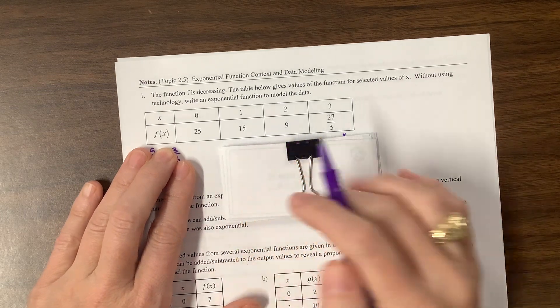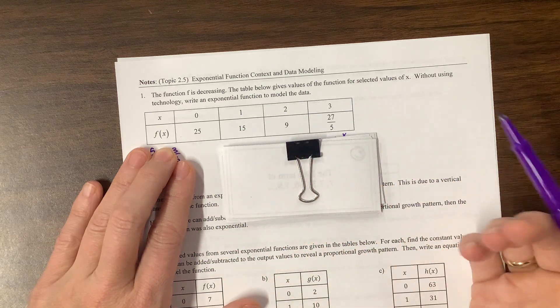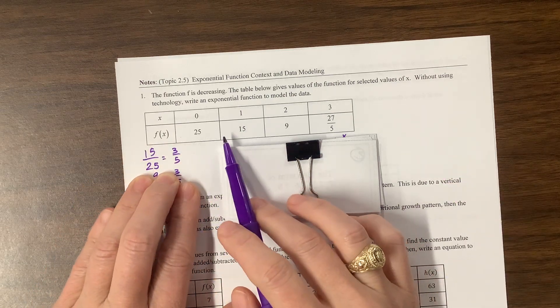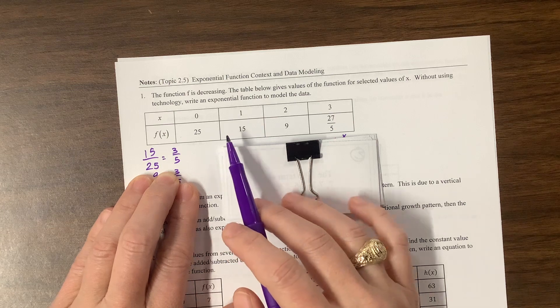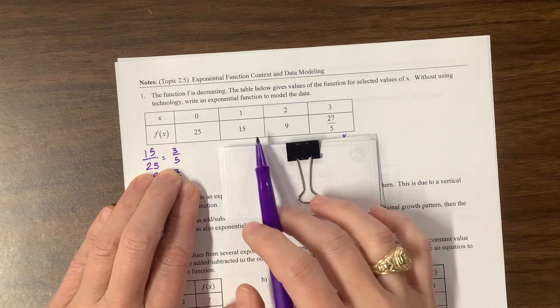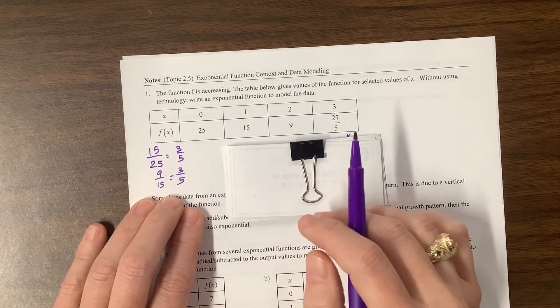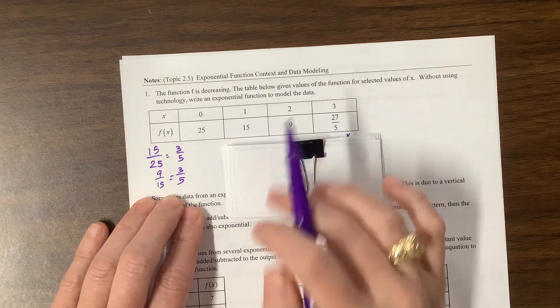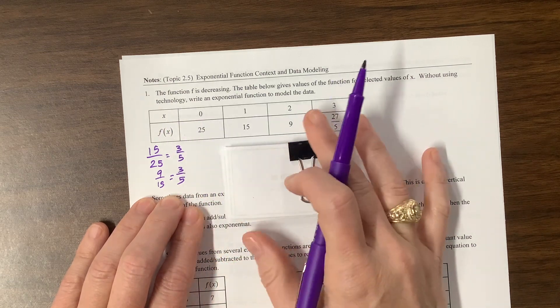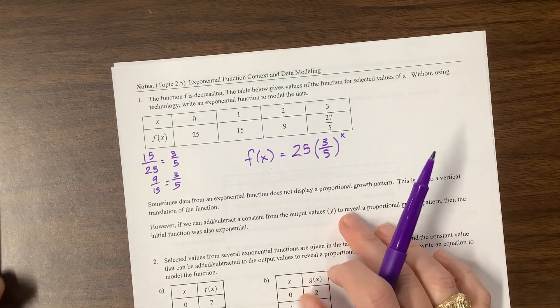So the first thing I did with this one is I thought of it a little bit as a sequence, so it appeared to be similar to a geometric sequence. So I took the first two terms that I had, the first two output values or the y values, and I tried to see was there a ratio, and I found that it was three-fifths. When I do 15 over 25 it reduces to three-fifths. Then I did 9 over 15 and that also reduces to three-fifths. So it made me think that I could do my initial amount, so at time zero or at an x value of zero I was at 25. So I wrote the equation f of x is equal to 25 times three-fifths to the x.